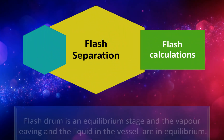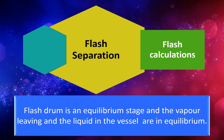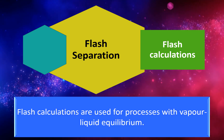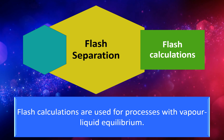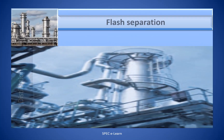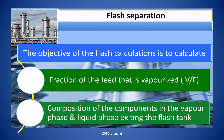Flash calculations. The Flash drum is an equilibrium stage and the vapor and liquid in the vessel are in equilibrium. Flash calculations are used for processes with vapor-liquid equilibrium. The objective of the flash calculations is to calculate the fraction of the feed that is vaporized, that is the V/F ratio, and the composition of the components in the vapor phase and liquid phase exiting the flash tank.